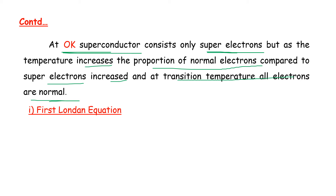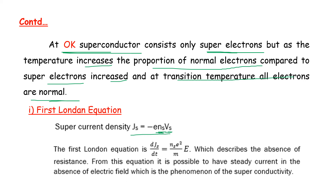The equation of motion or acceleration of electrons in the superconducting state gives the current density Js = −eNsVs. The first London equation is: dJs/dt = (Ns e²/M) · E, which describes the absence of resistance. From this equation, it is possible to have a steady current in the absence of an electric field — the phenomenon of superconductivity.